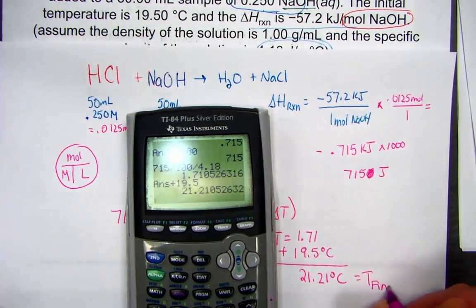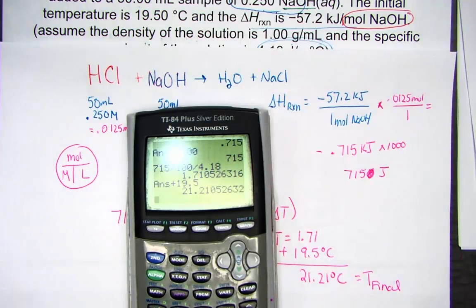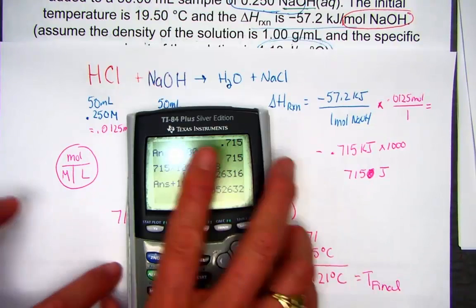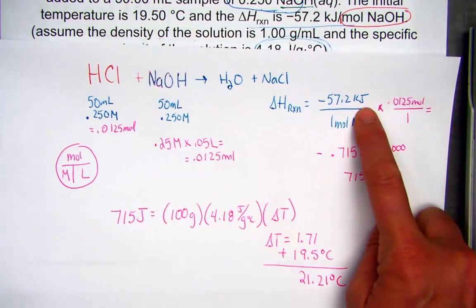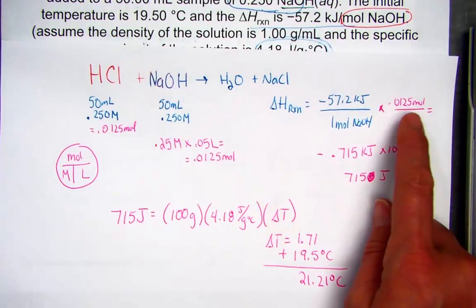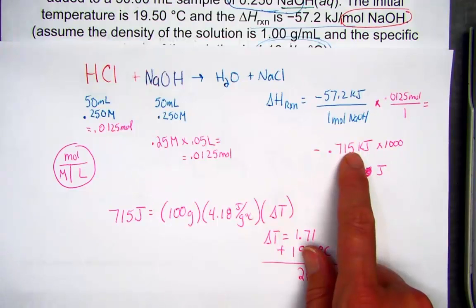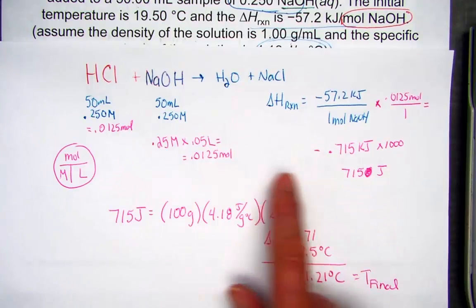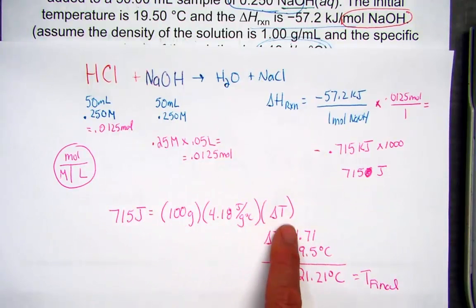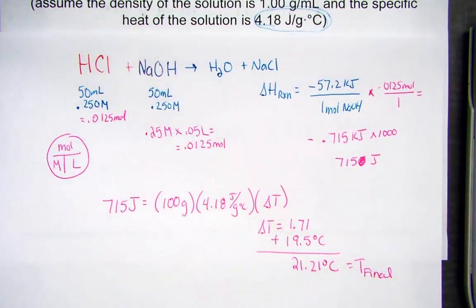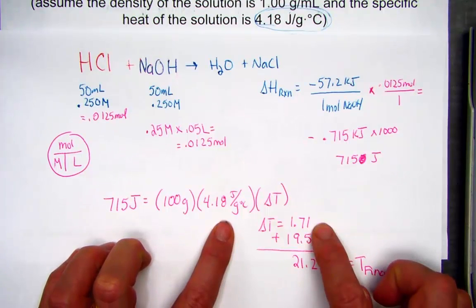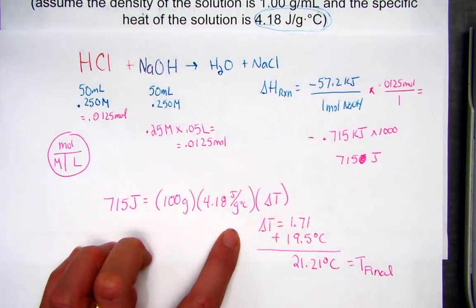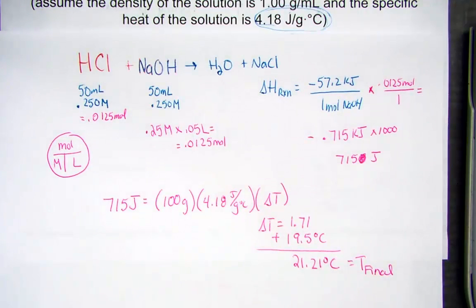That makes so much more sense because water should warm up only a little — it has such a high heat capacity. Using molarity times liter to find the correct number of moles, we adjusted the kilojoules for the small amount of reactants used. The 0.715 kJ was changed to 715 joules, set equal to MC delta T. The water changed by 1.71 degrees, giving a final temperature of 21.21 degrees Celsius.